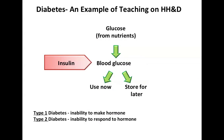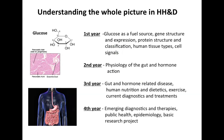Just to give you an example of how you might learn about a particular disease throughout four years of this course, I'm using the example of diabetes. Diabetes is a disorder that affects the regulation of blood glucose. We take in glucose from nutrients in our diet; it's absorbed through the gastrointestinal tract into the blood, and then from the blood it can be either used now or stored for later. The concentration of blood glucose is regulated by the hormone insulin.